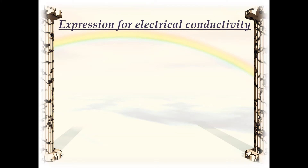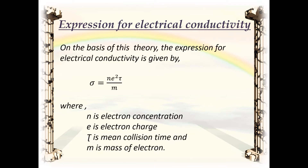Based on these assumptions, the expression for electrical conductivity is σ = ne²τ/m, where n is the electron concentration (number of free electrons per unit volume), e is the electron charge, τ is the mean collision time, and m is the mass of the electron.